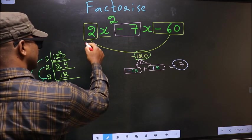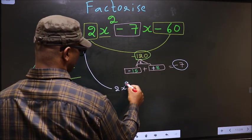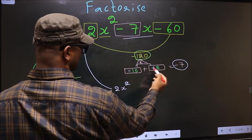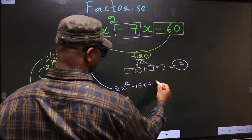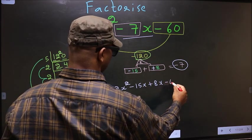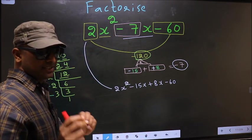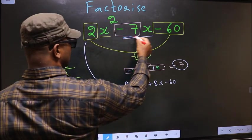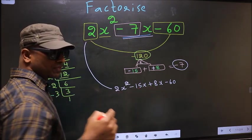Now you change this to 2x². In place of -7x, now we should write -15x plus 8x minus 60. Did you understand? In place of -7x, we have written this.